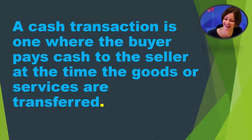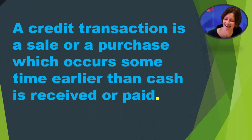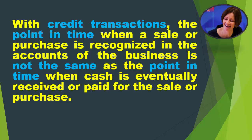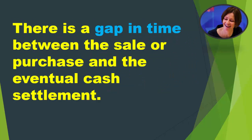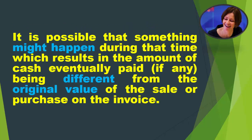A cash transaction is one where the buyer pays cash to the seller at the time the goods or services are transferred. A credit transaction is a sale or a purchase which occurs sometime earlier than cash is received or paid. With credit transactions, the point in time when a sale or purchase is recognized in the accounts is not the same as when cash is eventually received or paid. There is a gap in time between the sale or purchase and the eventual cash settlement, meaning the amount of cash eventually paid may differ from the original invoice value.